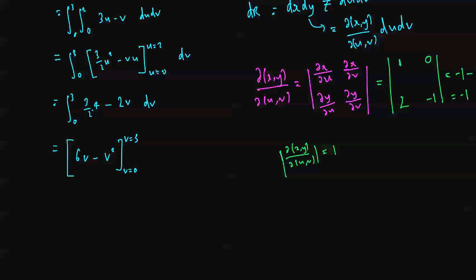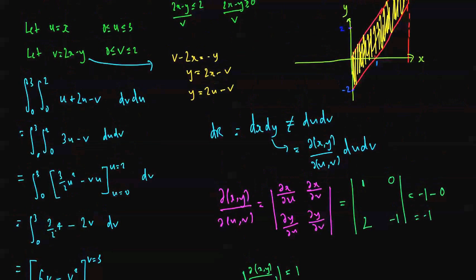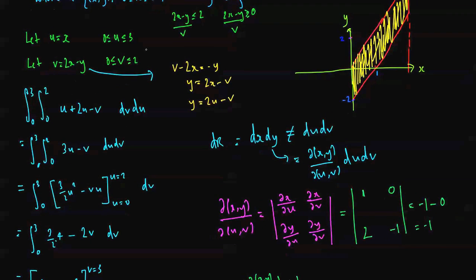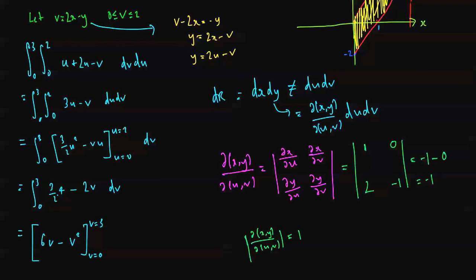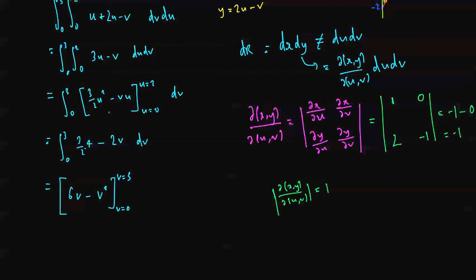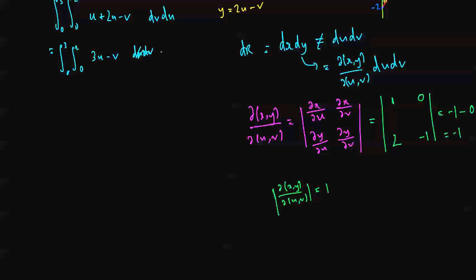I think I've got that the wrong way around. I do have that the wrong way around. That's a shame. So scrap that, I'll undo all what I did. Bad mistake, I apologize. It should be dv du, which I have up here. So integrate with respect to v first.